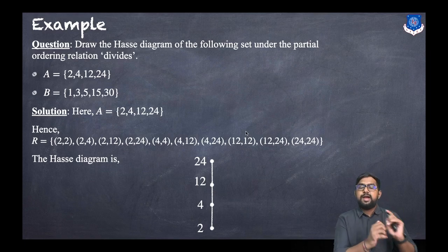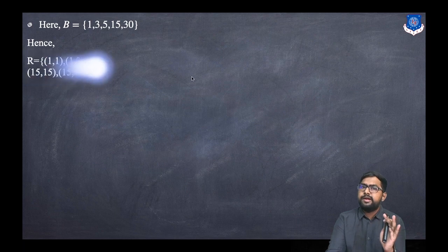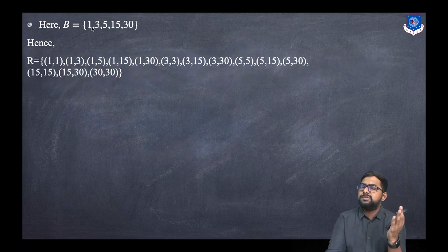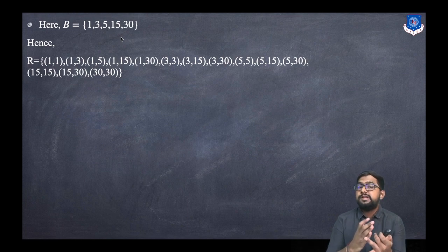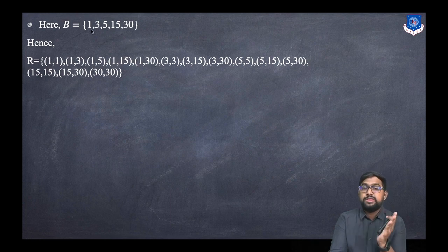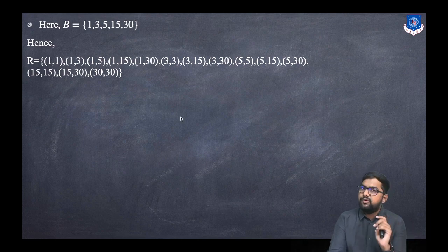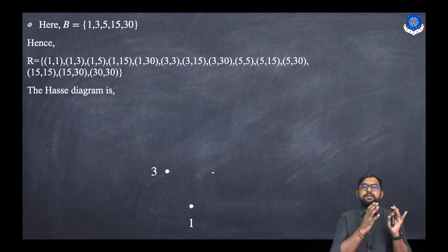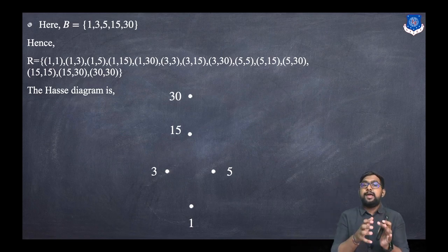This is the Hasse diagram for the first set. Now for the second set: A = {1, 3, 5, 15, 30} under the divides relation. All numbers divide themselves. Then 1 divides 3, 5, 15, and 30; 3 divides 15 and 30; 5 divides 15 and 30; 15 divides 30. We will again directly construct the Hasse diagram. Take all points: 1, 3, 5, 15, and 30.